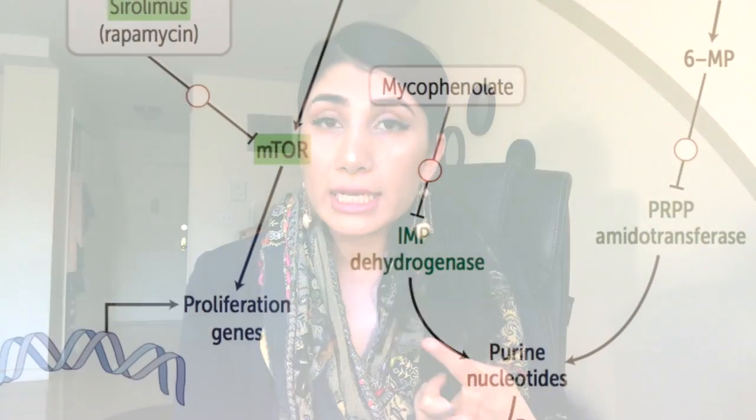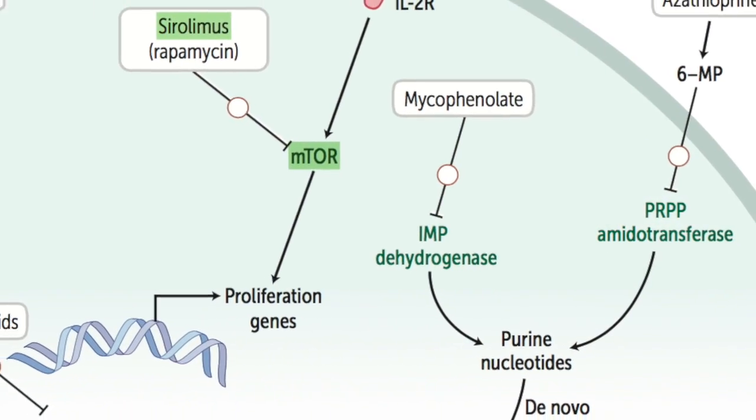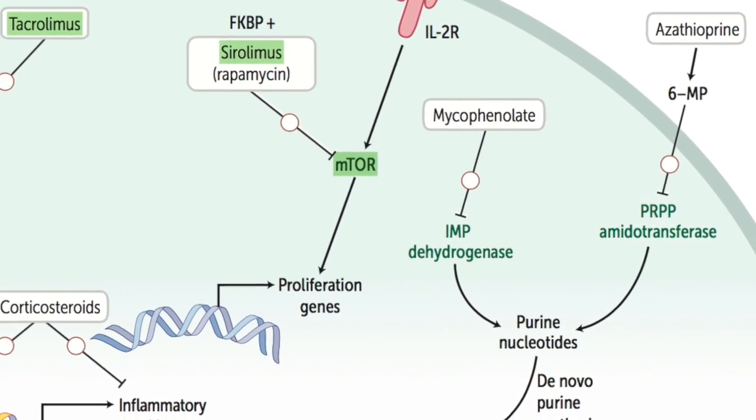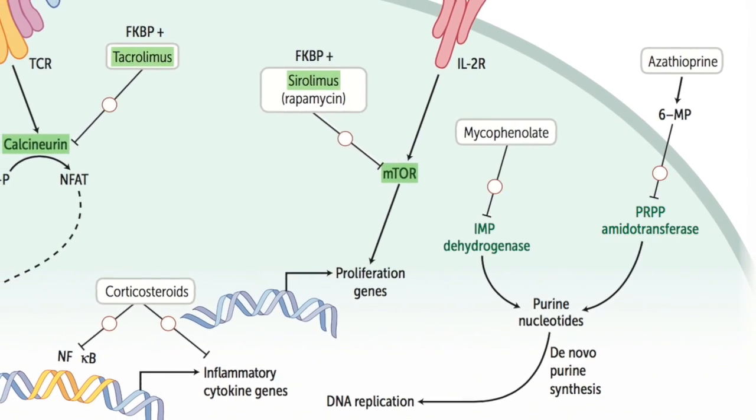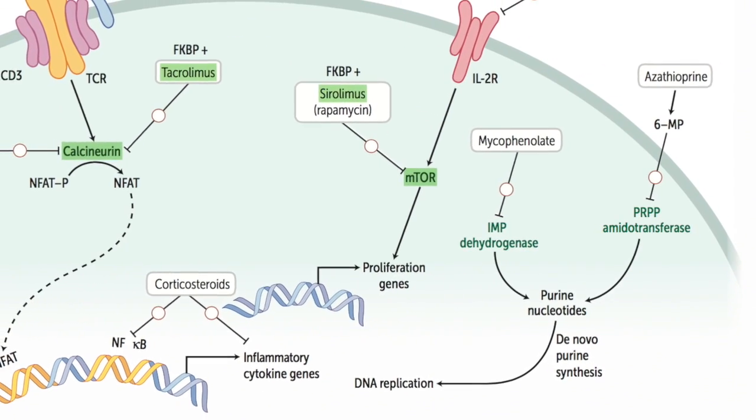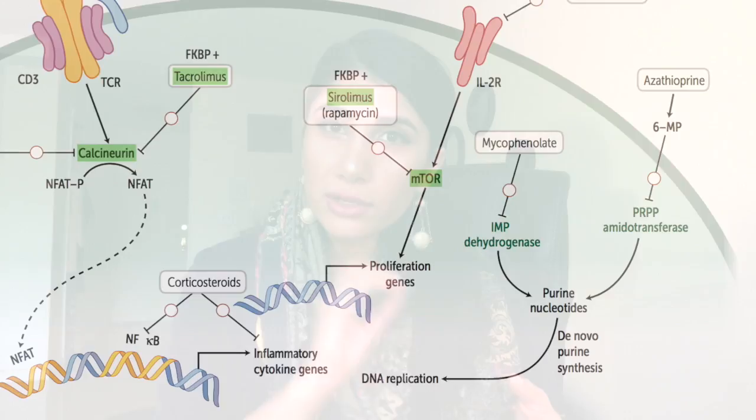Mycophenolate has an adverse effect of bone marrow suppression. It does not cause hirsutism or gingival hypertrophy, so you can rule that out as well. If a vignette presents with hirsutism and gingival hypertrophy, the answer is cyclosporine — not tacrolimus, not azathioprine, and not mycophenolate.